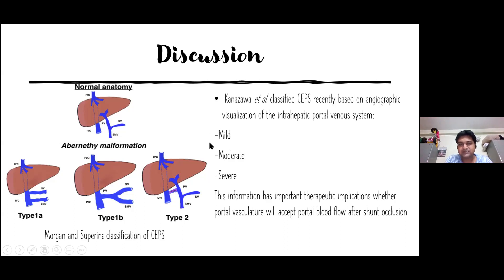If the intrahepatic portal vein is mildly atretic, we can plan device closure or a covered stent. But if the intrahepatic portion of the portal veins is grossly atretic, then liver transplantation is the only treatment.